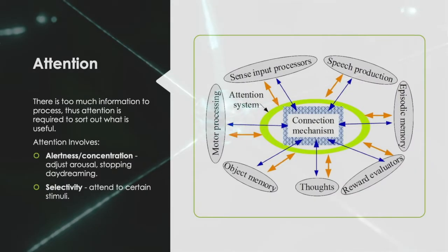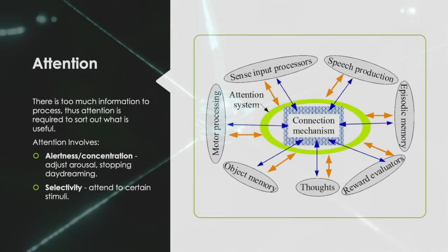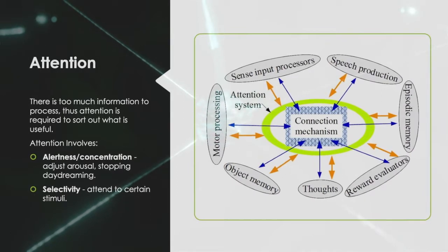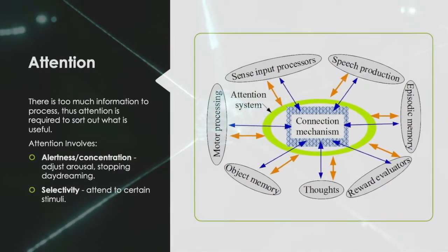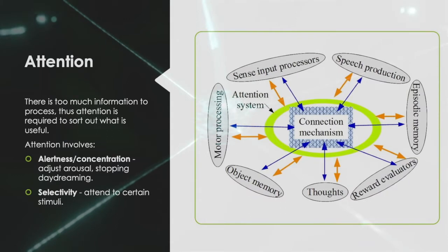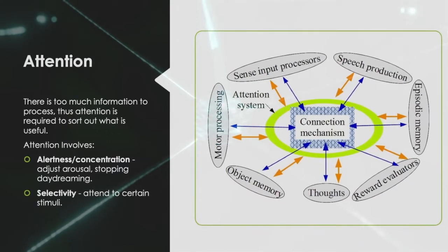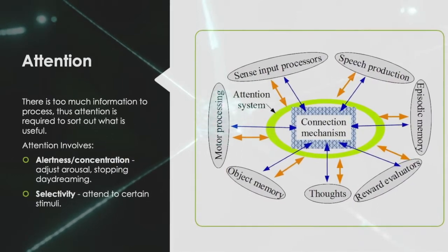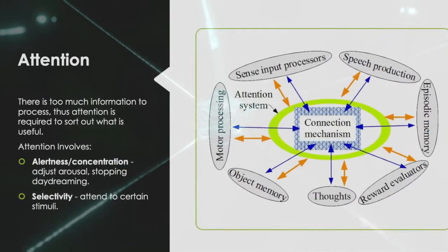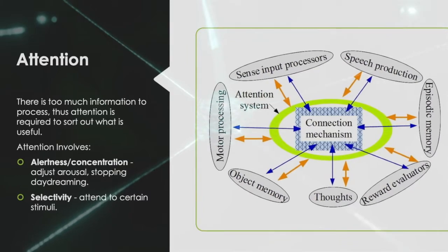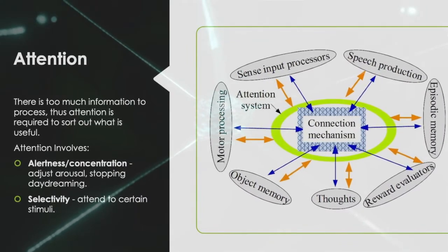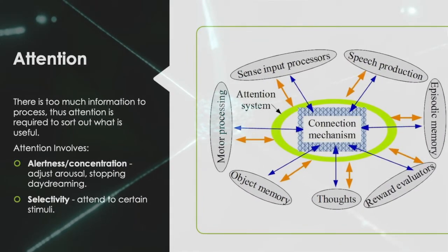There is too much information to process, thus attention is required to sort out what is useful. Alertness or concentration is the adjusting of the arousal, which helps to stop daydreaming. And there is a degree of selectivity in attention, which allows individuals to attend to certain stimuli.